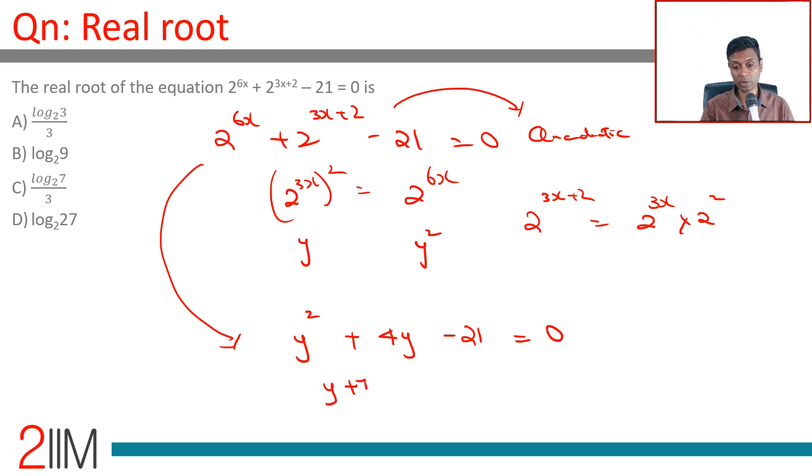This is nothing but (y + 7)(y - 3) = 0. We are splitting this 4 as 7 and -3. y = -7 or +3.